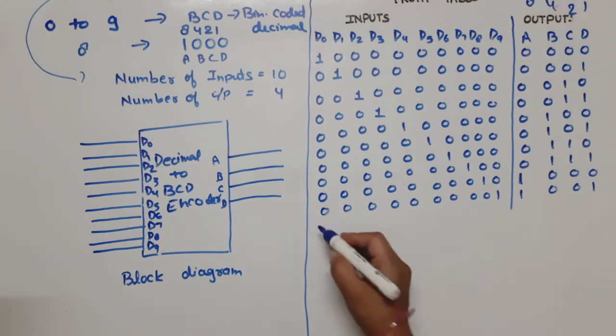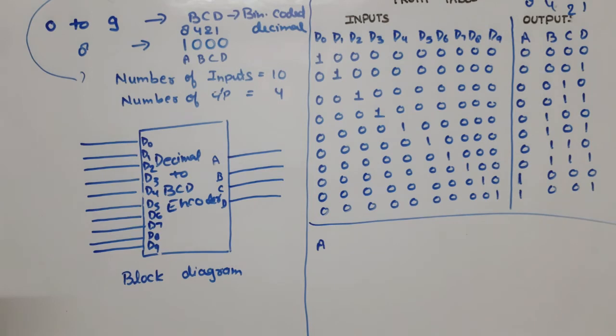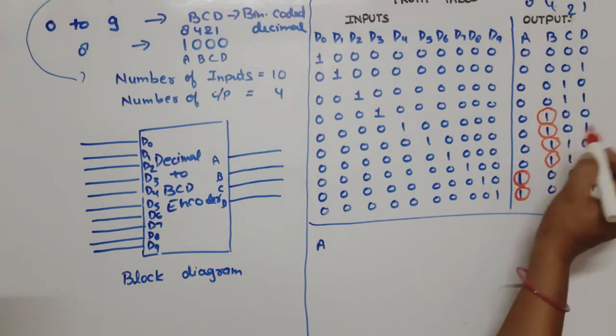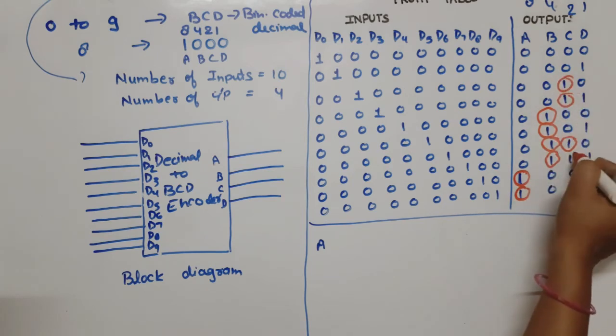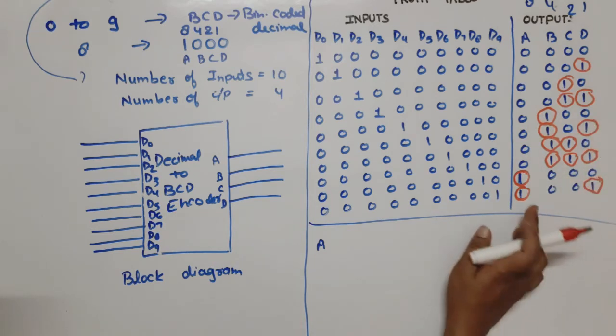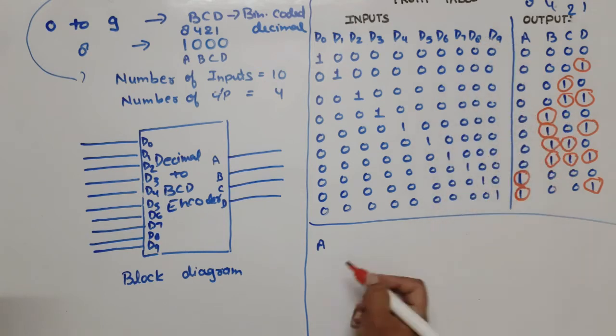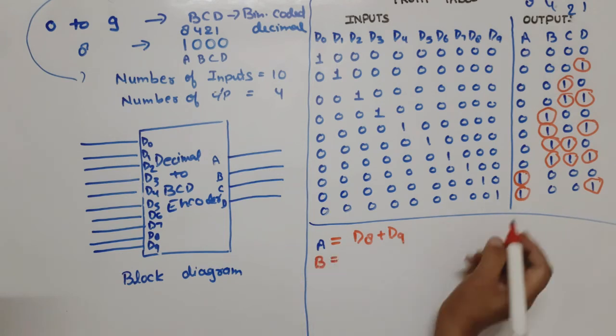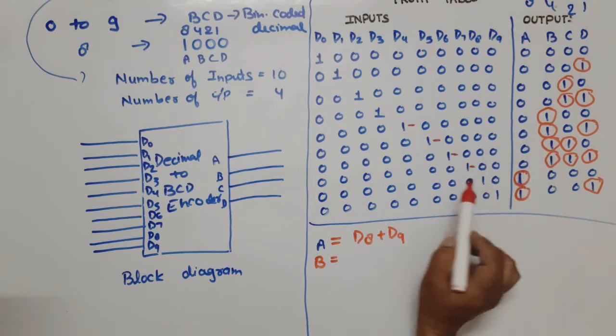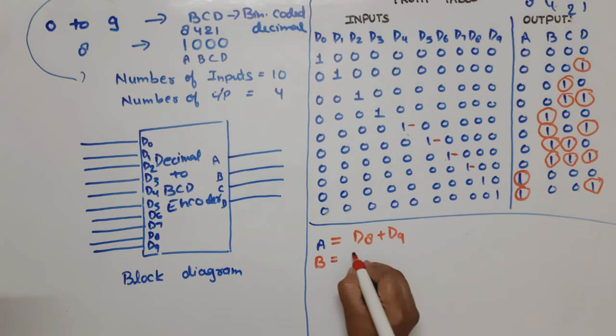This is our table. Now we write expressions. When we write A's expression, we see where A is high. I will circle where high values are. For A, last two cases - A will be equal to D8 plus D9. Now for B, B is high at D4, D5, D6, D7. So B equals D4 plus D5 plus D6 plus D7.